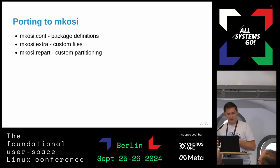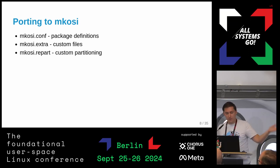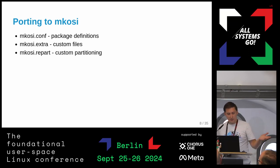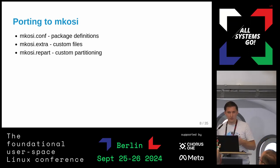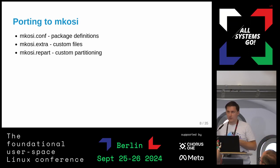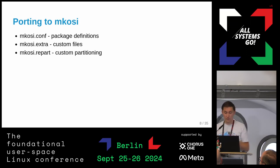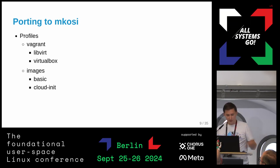Porting to MakeOSI is actually fairly trivial — it took me like half a day. Basically you create the MakeOSI config file, add the packages you want, and use the extra directory. For our images we need an extra systemd service; by default Arch doesn't start SSH, so you add a systemd preset where it will ultimately start SSH. Every part allows for some custom partitioning — fairly trivial, easily done.